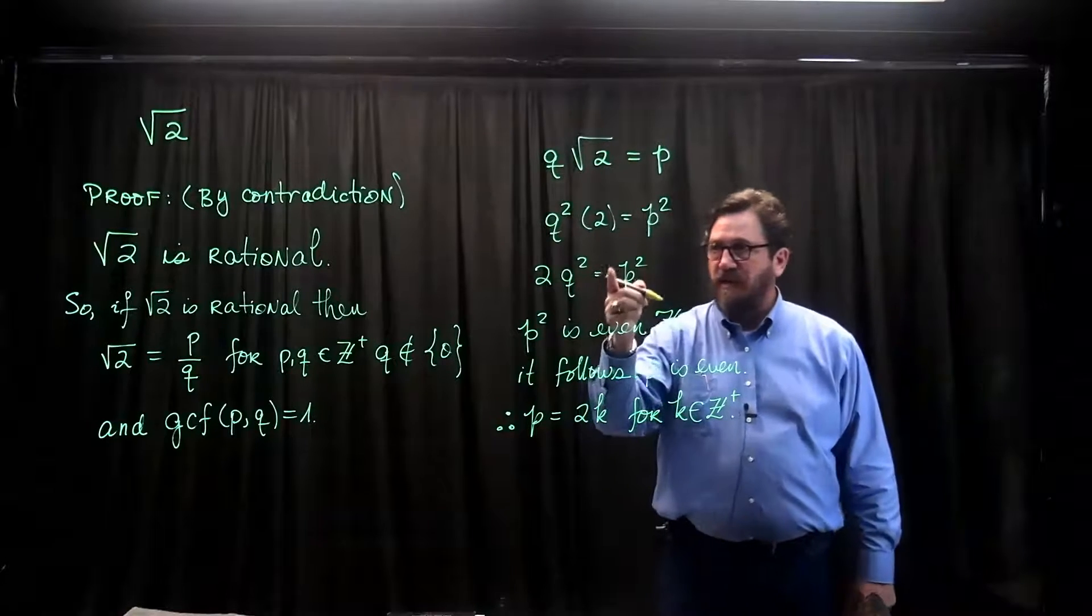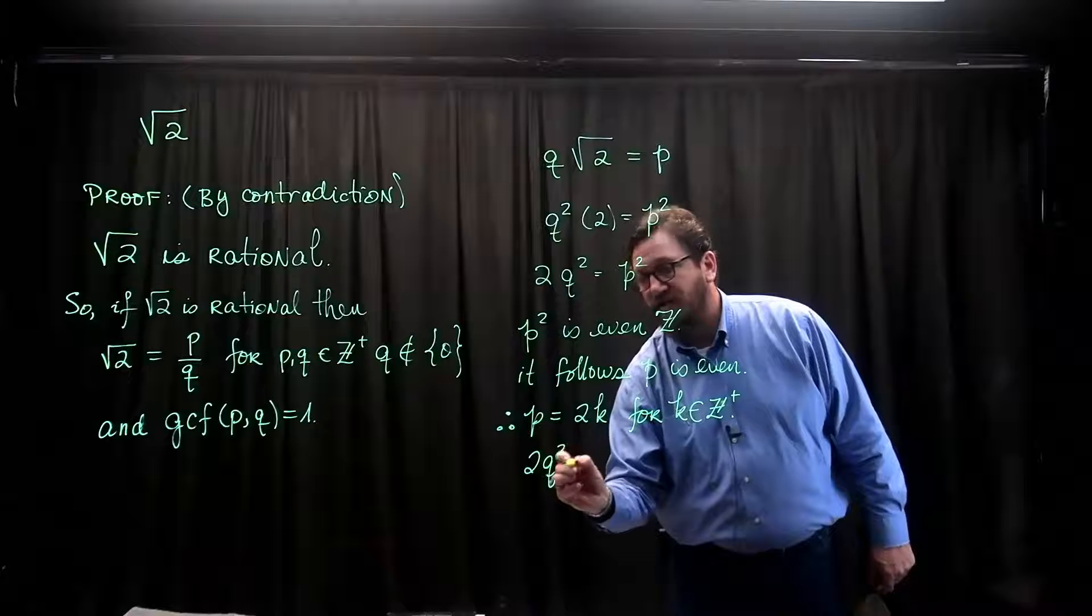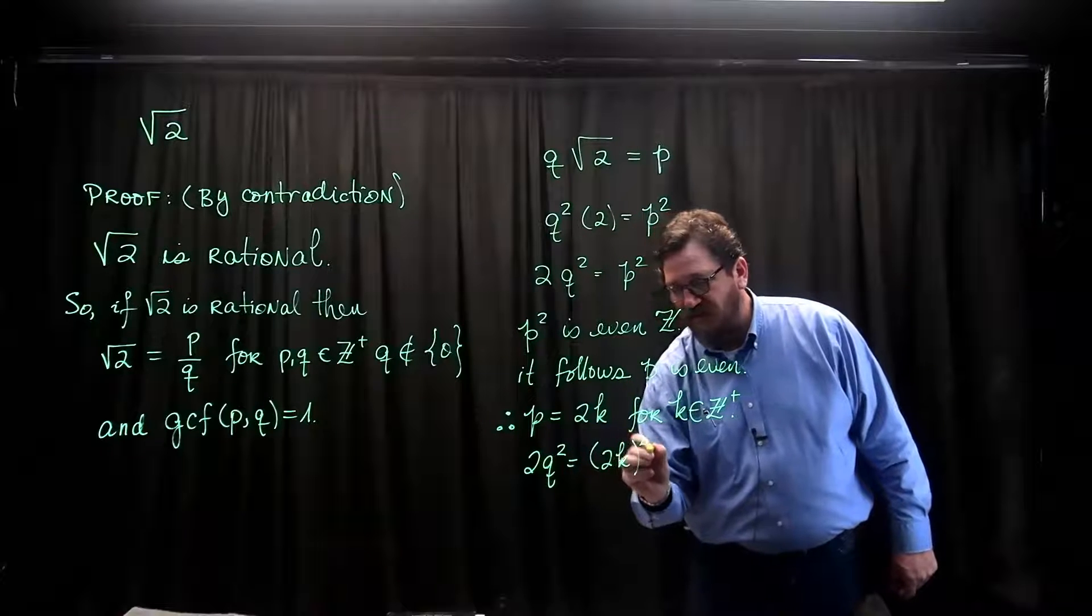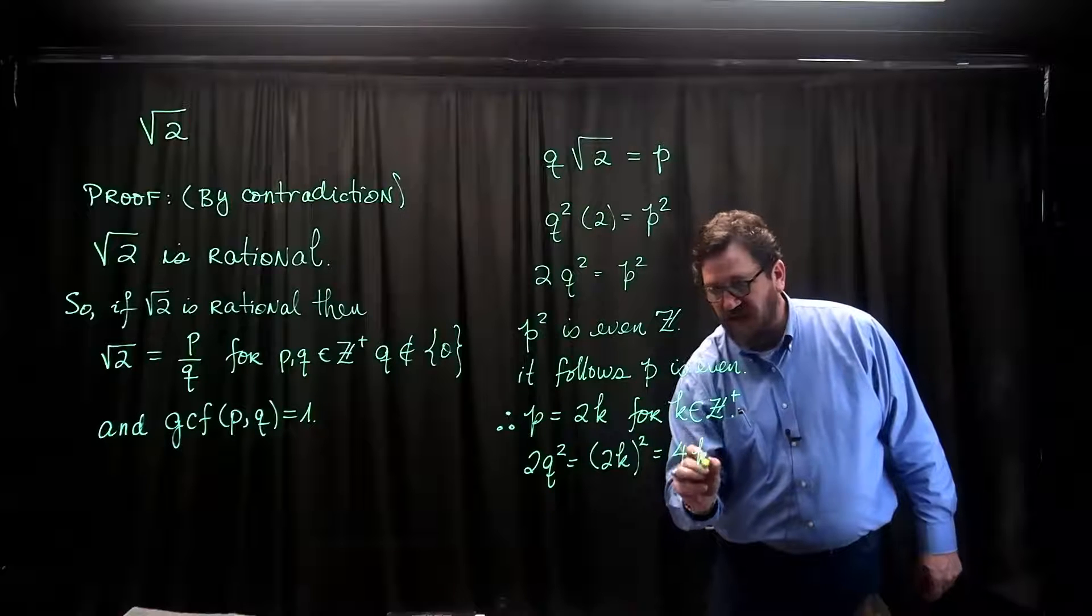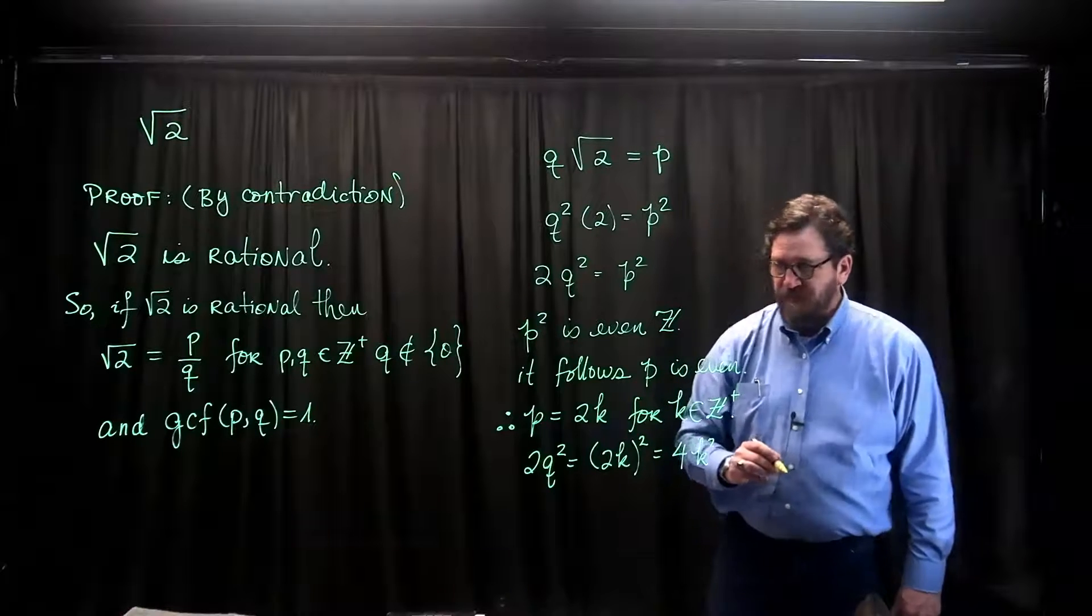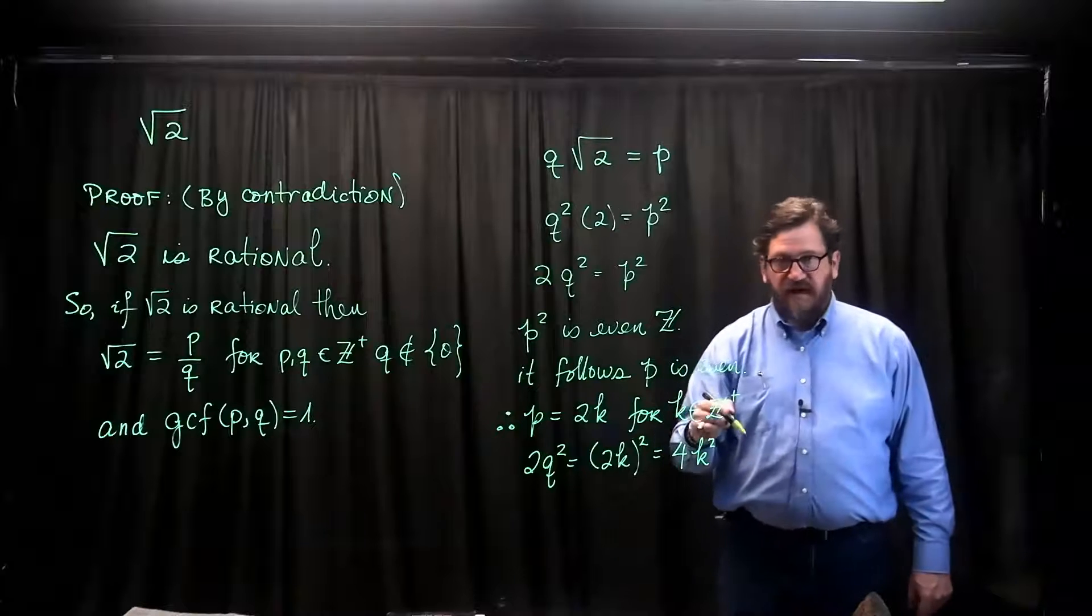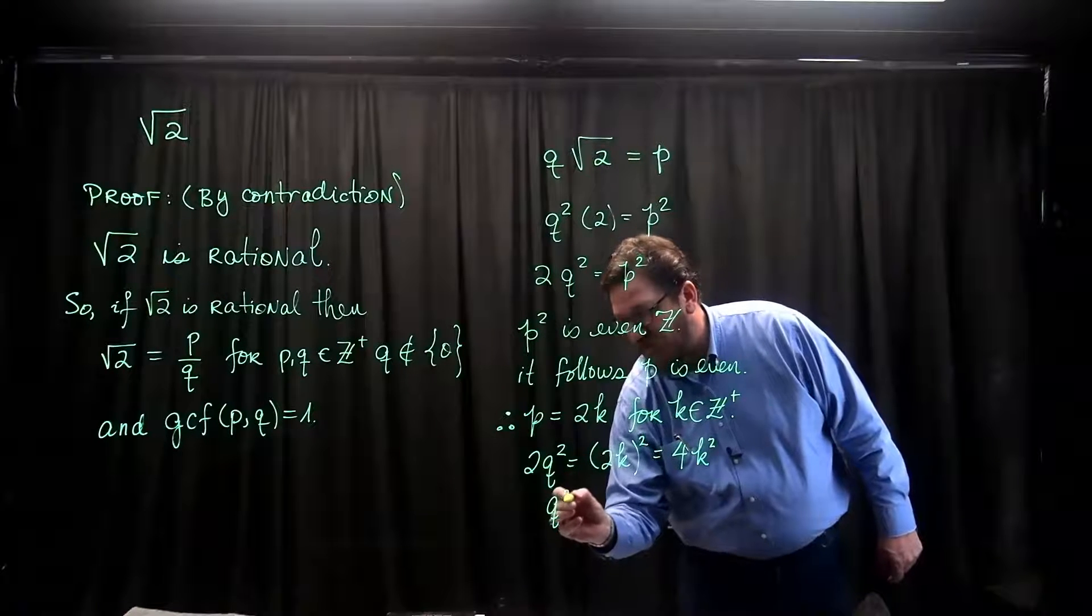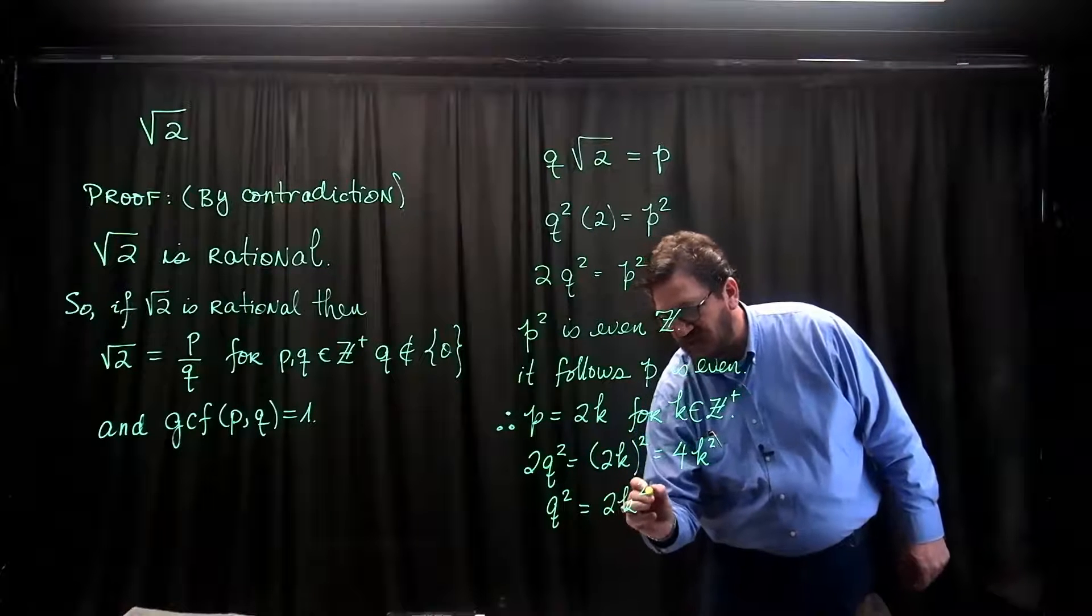So I'm going to go back to my last equation. So now then, that says I can divide both sides by 2. So I now have q squared is equal to 2k squared.